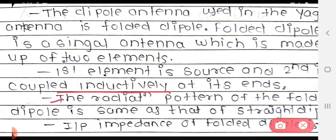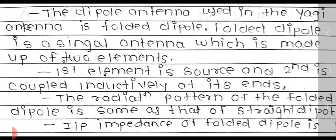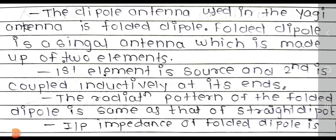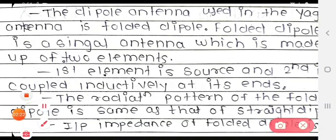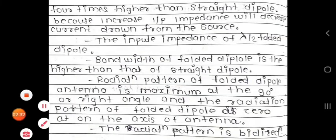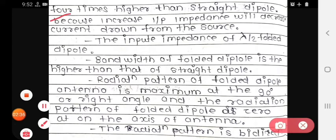The radiation pattern of the folded dipole is the same as that of the straight dipole. Next, the input impedance of a folded dipole is four times higher than the straight dipole. This input impedance is four times higher than that of the straight dipole.